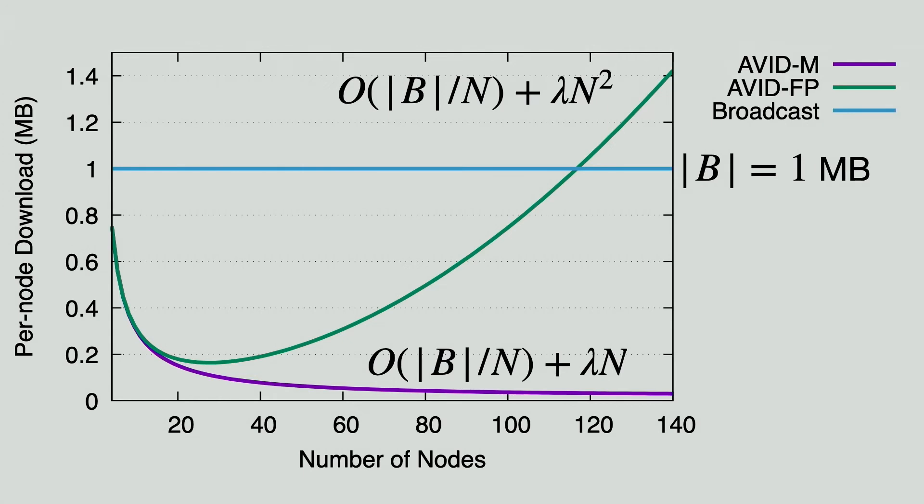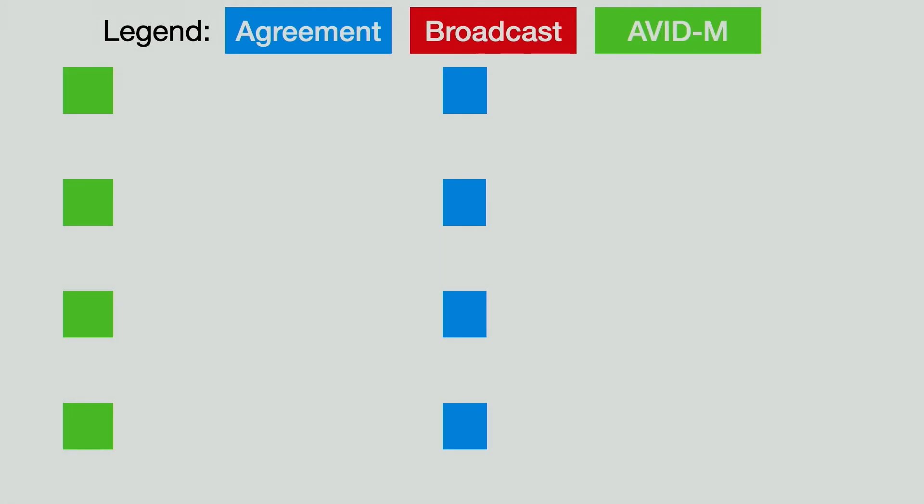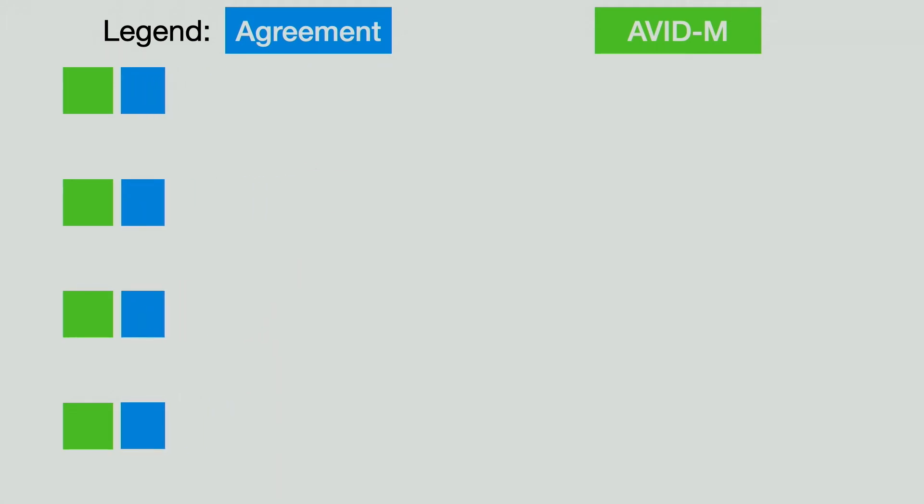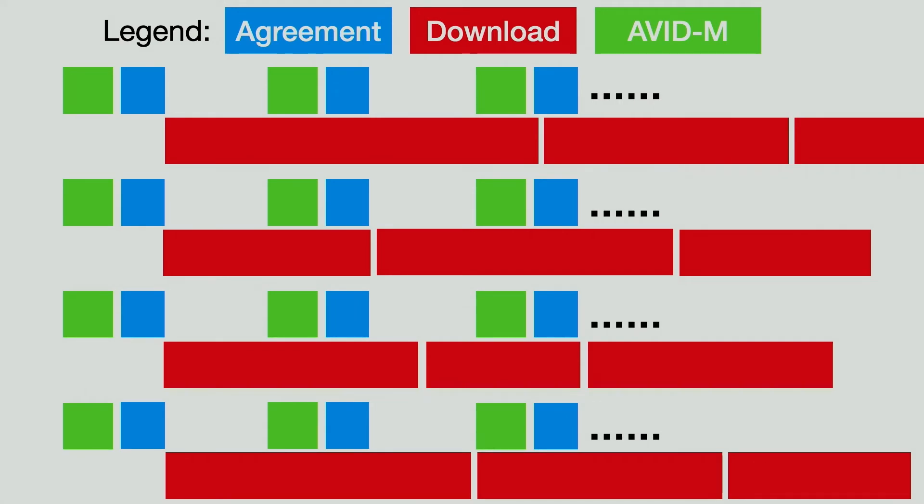Let's now summarize our approach. We first replace the bandwidth intensive block download with AVIDM to ensure data availability. Because the per node cost of AVIDM is low, even slow nodes will finish quickly. Nodes then proceed directly to the agreement phase. After that finishes, nodes download the blocks asynchronously using whatever bandwidth they have. Now that block download is out of the critical path, slow nodes will never bottleneck the fast nodes, even if they are several epochs behind, because they can always participate in AVIDM and agreement.